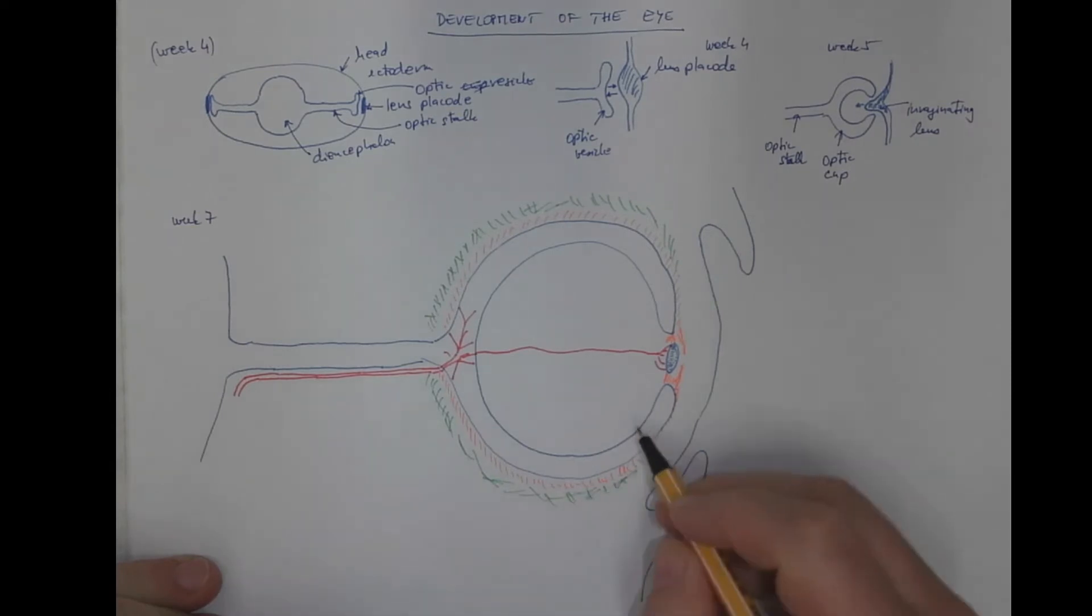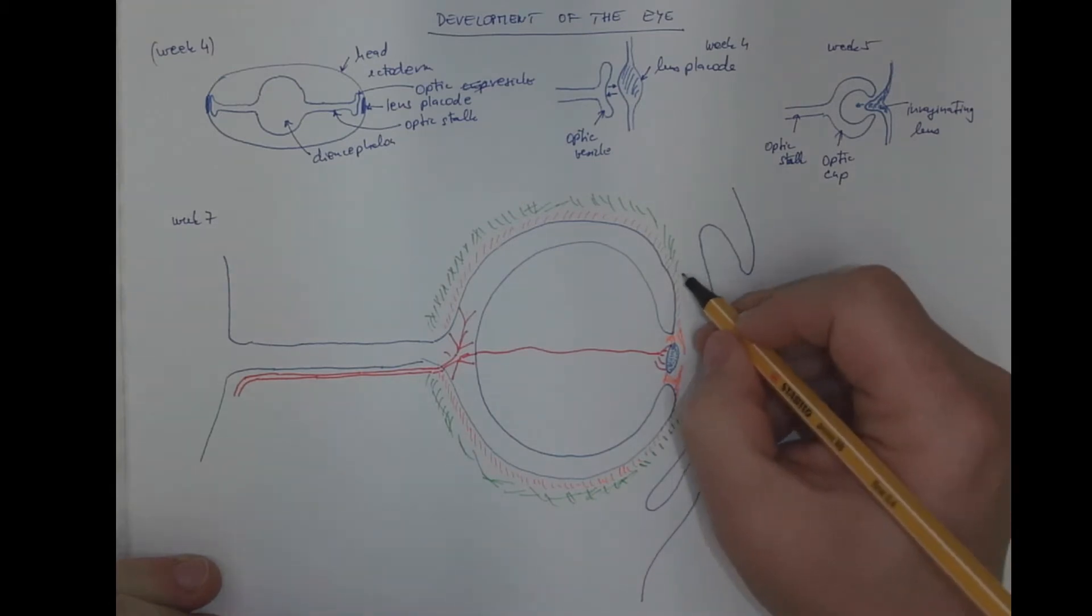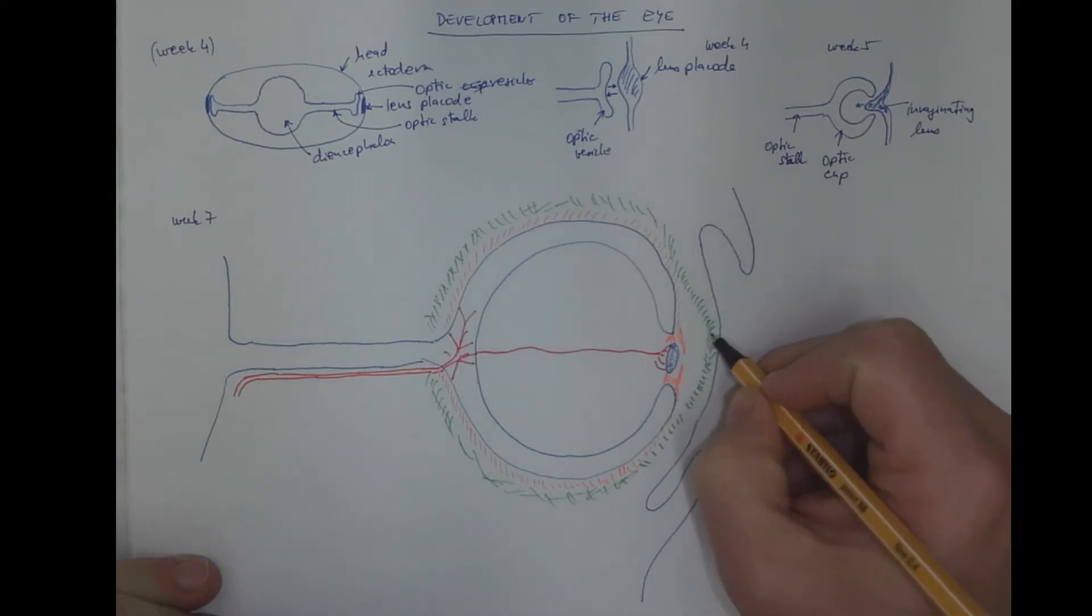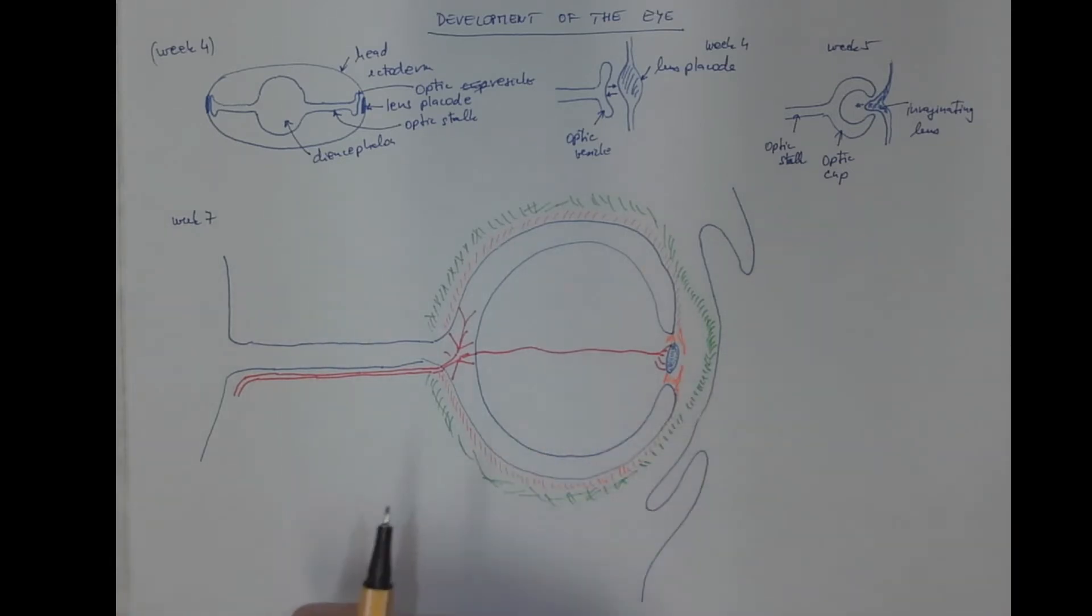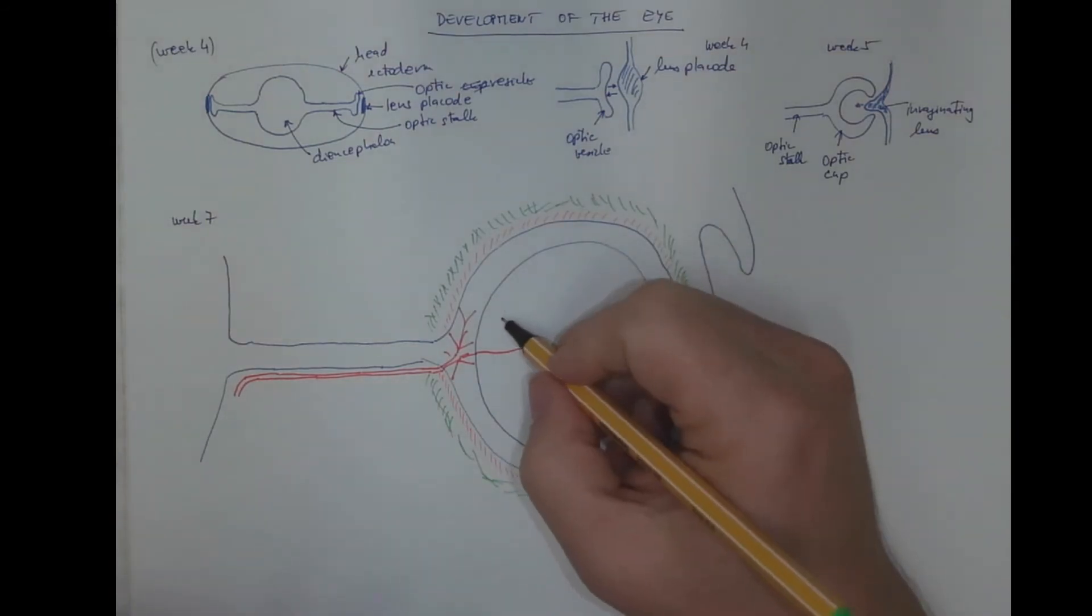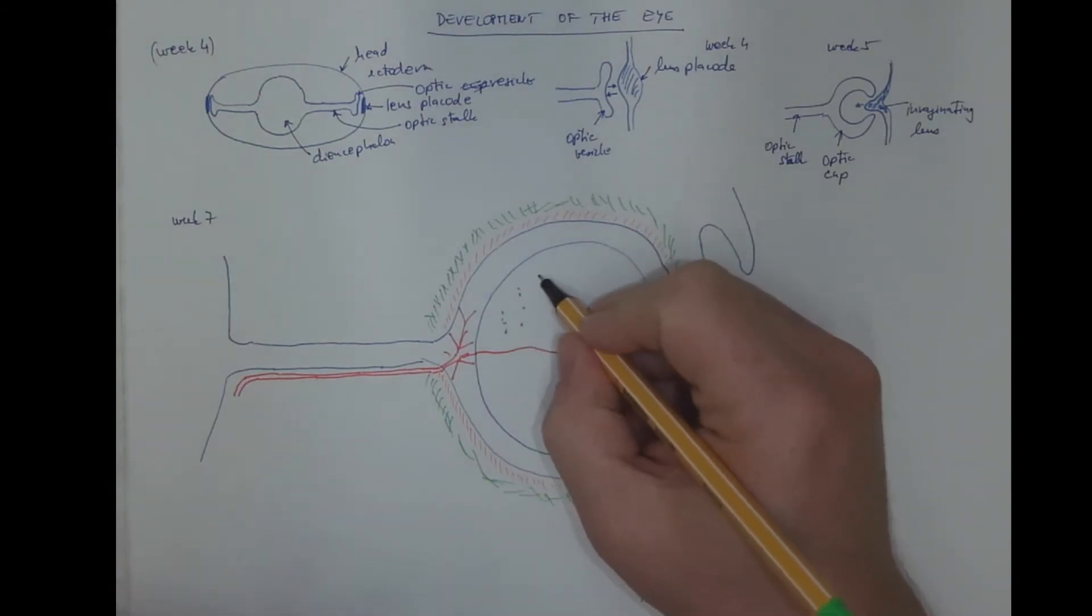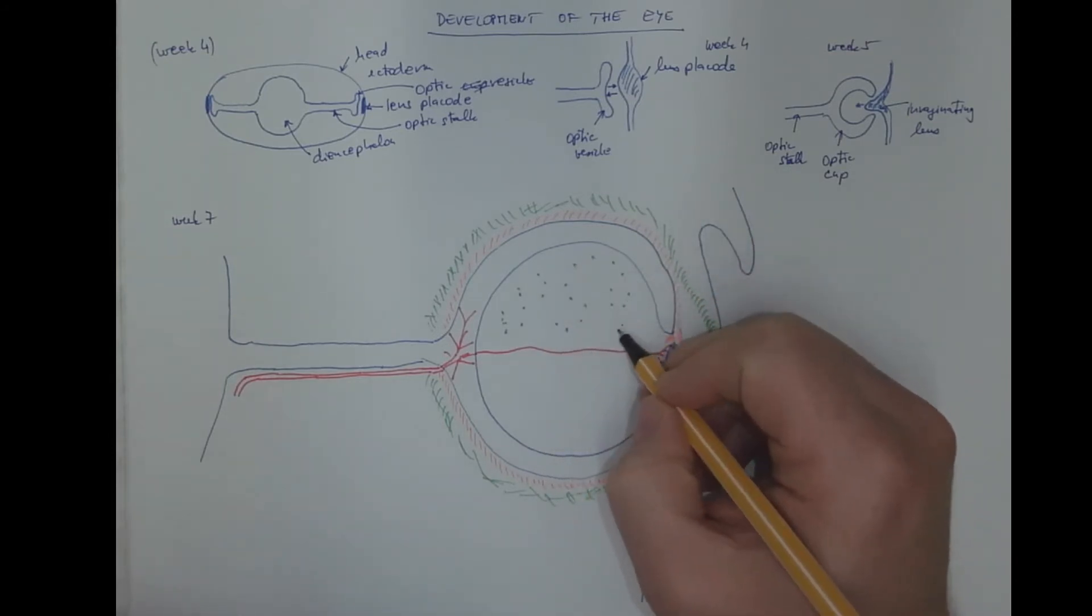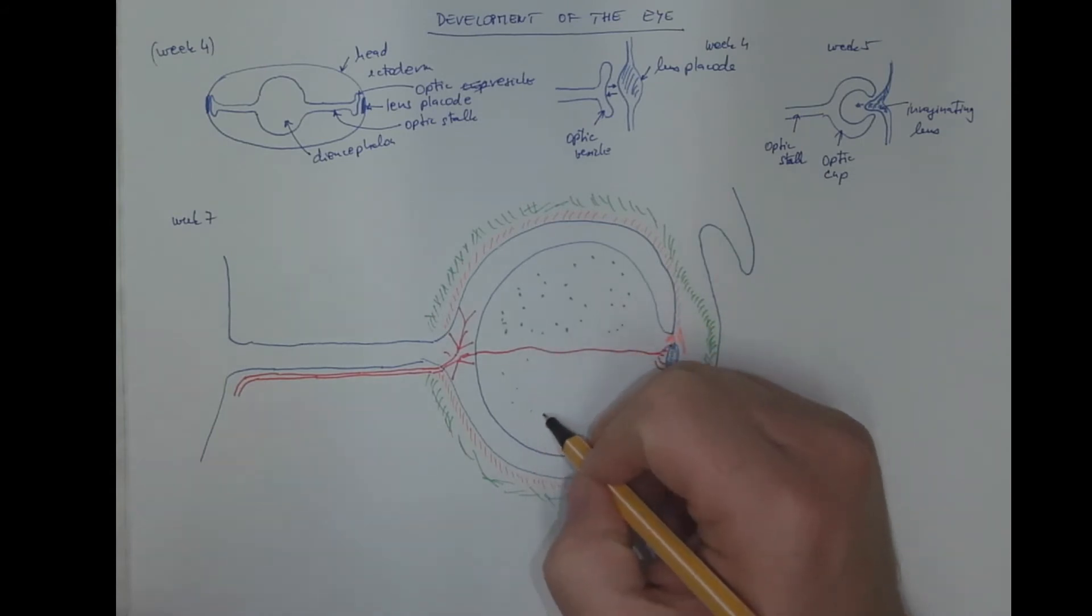And then we got the cornea. The fibrous stroma of the cornea, because the epithelium of the cornea is of ectodermal origin. The inner space here is filled with loose mesenchyma that will turn to the vitreous body.